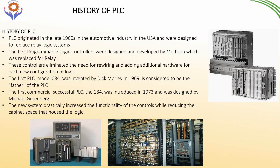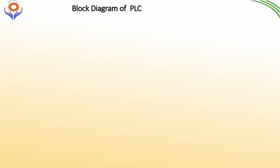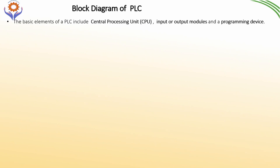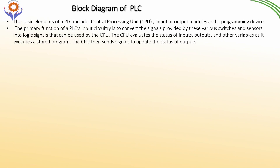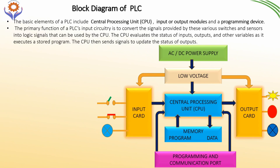Now we will go to the block diagram of PLCs. The basic elements of the PLC include the CPU, input/output devices, and programming devices. The primary function of the PLC inputs circuitry is to convert signals provided by various switches and sensors into logic that can be used by the CPU. The CPU evaluates the states of inputs, outputs, and other variables to execute a stored program logic. Then the CPU sends signals to update the status of outputs.